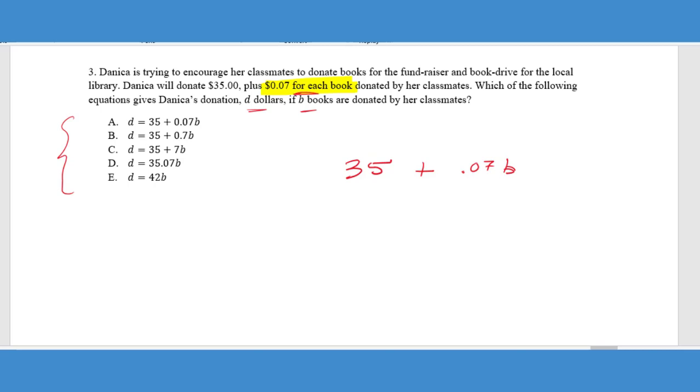So if we have seven cents times each book, anytime we see per or for each, we know that we're multiplying. We're going to get seven cents for each book, so if 10 books are donated, we're going to multiply 10 times 0.07 and then we're going to add that to 35 and that's going to be the total dollar amount of the donation. So we basically have pieced together an equation here and now we just need to match it up to the correct answer. And we can see that the correct answer in this choice is A.